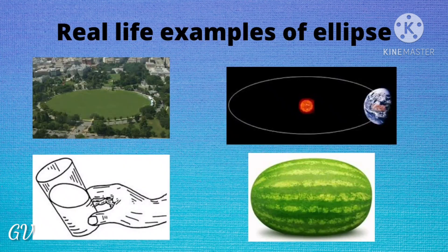Some real life examples of ellipses: The Earth revolves around the Sun in an elliptical path. Watermelons have an elliptical shape. A glass of water viewed at an angle shows an elliptical shape. We use ellipse shapes in many real life situations. If you find more real life examples, please share them in the comment box.